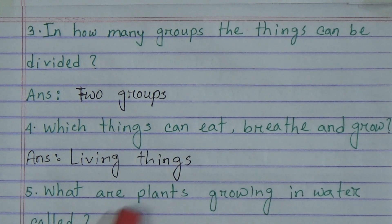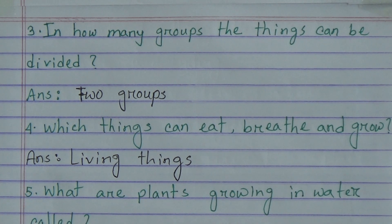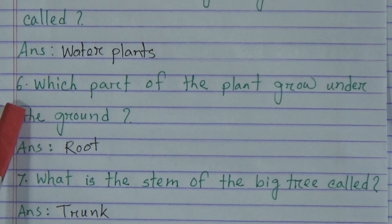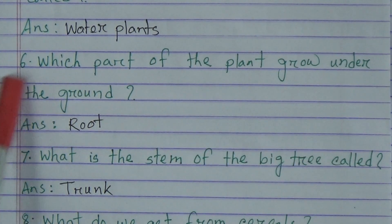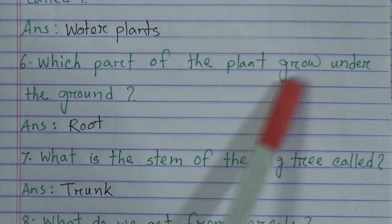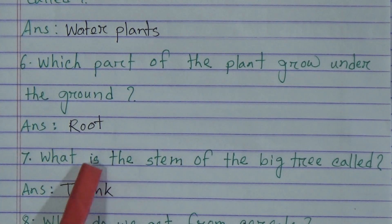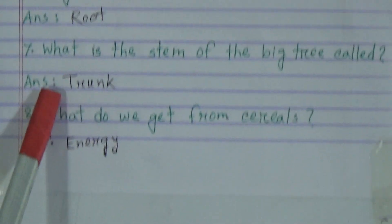Number five: What are plants growing in water called? Answer: water plants. Number six: Which part of the plant grows under the ground? Answer: root. Number seven: What is the stem of the big tree called? Answer: trunk. The stem of the big tree is called a trunk.